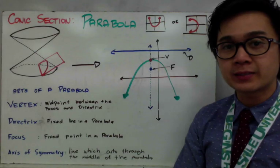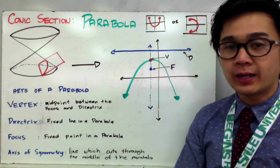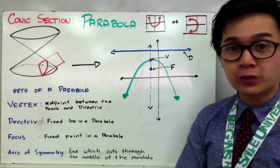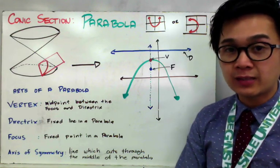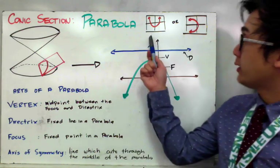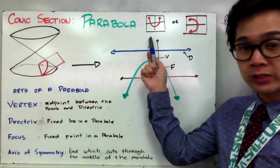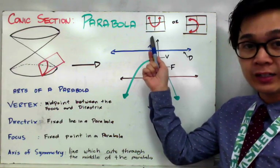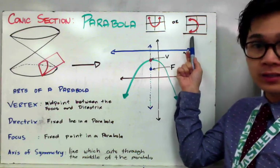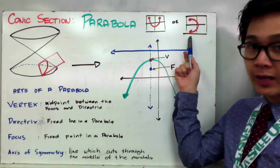Parabola is one of the conic sections we're going to be working on in this unit. Parabola has two sets of equations because it has two orientations: one is a parabola opening upwards and downwards, or opening vertically, and the other is a parabola opening sideways, which is to the left or to the right.